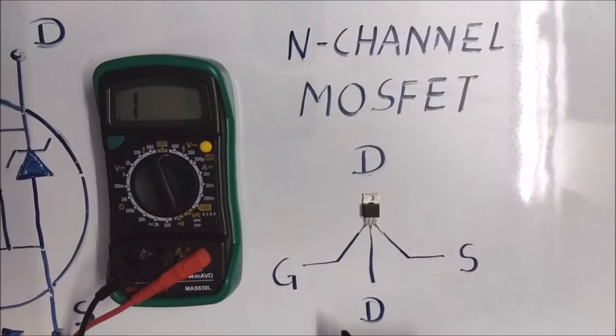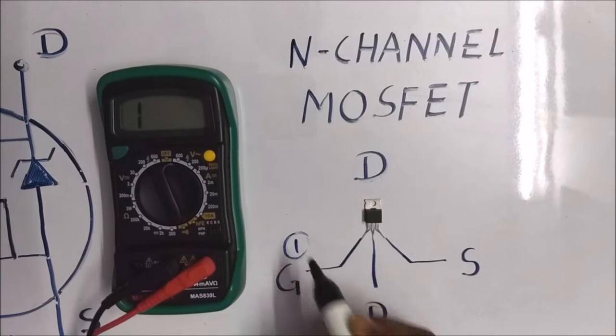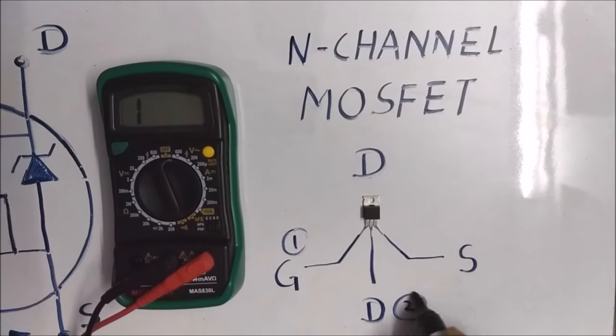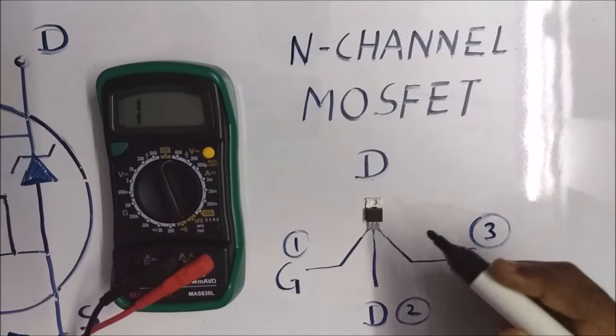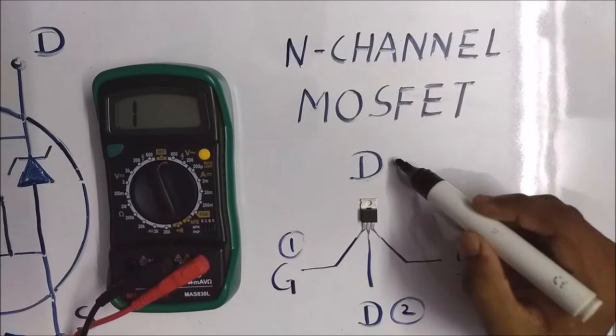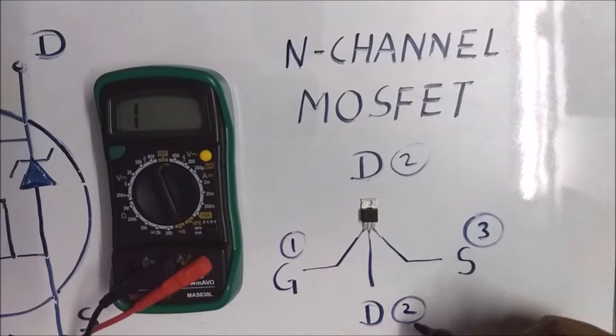There are three terminals on the IC. First terminal is gate, second terminal is drain, and third terminal is source. So the upper terminal is connected to the drain terminal.